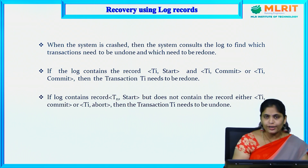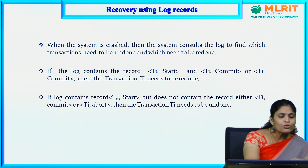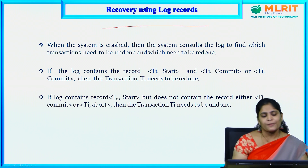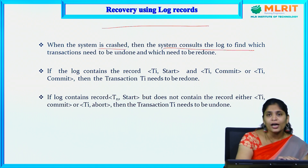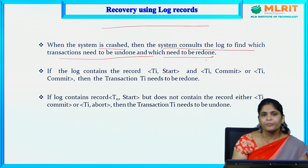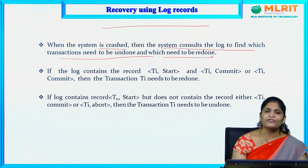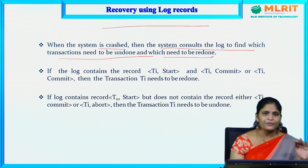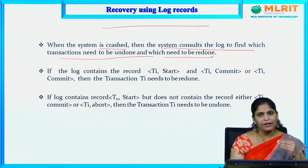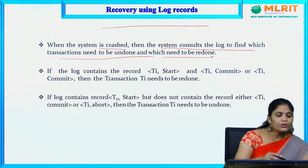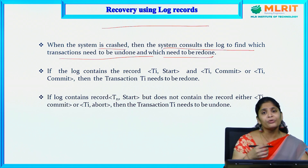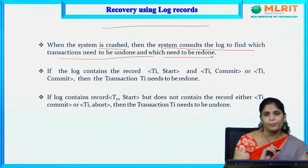For recovery using log records: when the system crashes, it consults the log to find which transactions need to be undone and which need to be redone. Undo means we start again from the operation that was stopped. Redo means whatever operations were already done are removed and the transaction must be performed from the start. By examining the logs, we can determine which transactions require undo and which require redo.